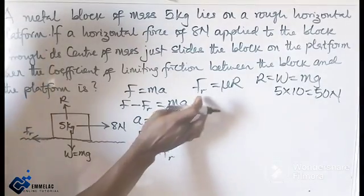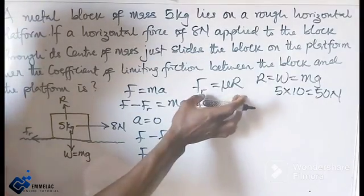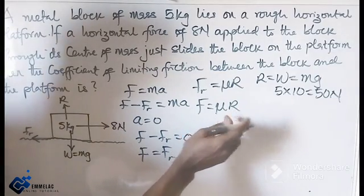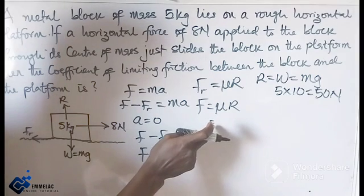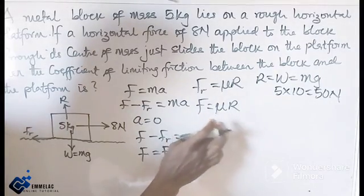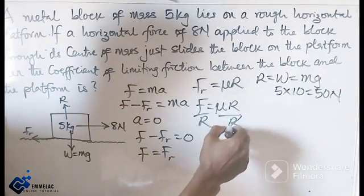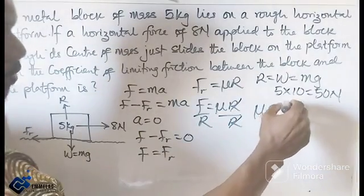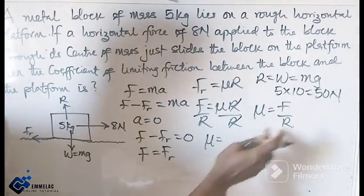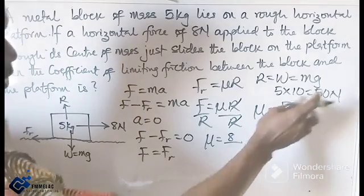So from here now, if we now apply this formula, we can now say that the resultant force will be mu times the reaction. And we are actually looking for this. So making mu the subject of the formula, we can now divide through by R. This cancels with this. So we have that mu equals F over R. The force here is 8 over the reaction here, which is 50.